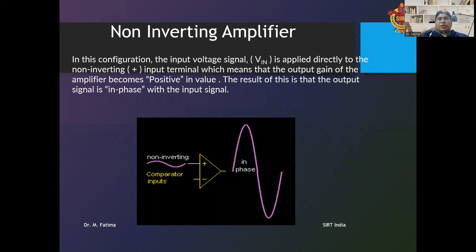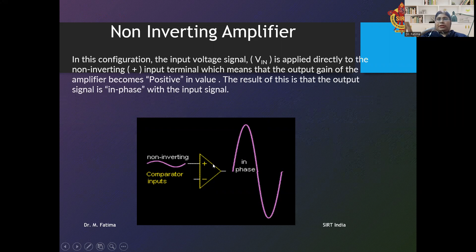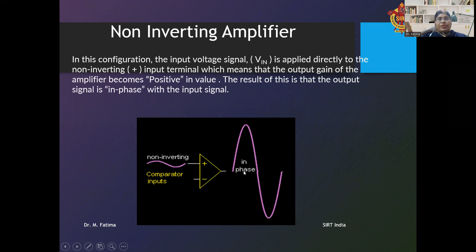In a non-inverting amplifier configuration, the input signal is applied to the positive terminal of the op-amp, that is the non-inverting terminal. This means the output gain of the amplifier becomes positive, and the result is that the output signal is in phase with the input signal. As shown in the diagram, the positive terminal is the non-inverting terminal and the negative terminal is the inverting terminal. The input is given to this positive terminal, and the op-amp amplifies the input signal without any phase shift.